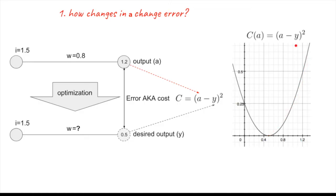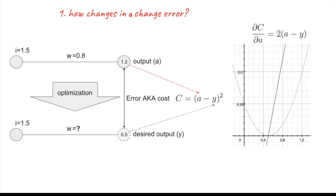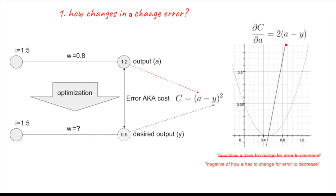We need the gradient — or in this one-dimensional case, the derivative — of the error expression with respect to A. The rate of change of the cost function with respect to A is simply 2(A − Y). When plotted, on this side of the minimum we decrease the value of A. We change the value of A proportionately to the negative of the gradient. So now we have our answer for how A has to change for error to decrease.